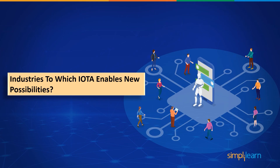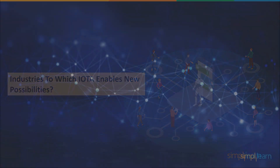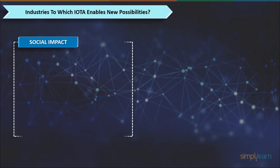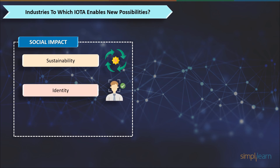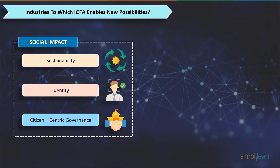Continuing this, let me take you through the impact of IOTA's Tangle in the real world. First is social impact. The IOTA Foundation encourages the utilization of technology to improve society at large. It focuses on sustainability, harnessing the power of IoT to manage natural resources more efficiently, and identity — introducing digital identity to people beyond borders — and citizen-centric governance to enable more transparent and inclusive governance.